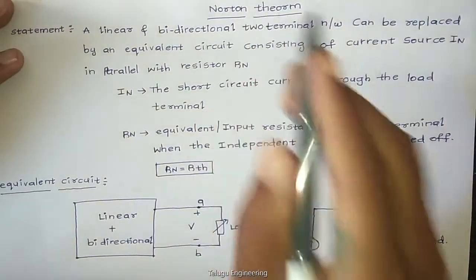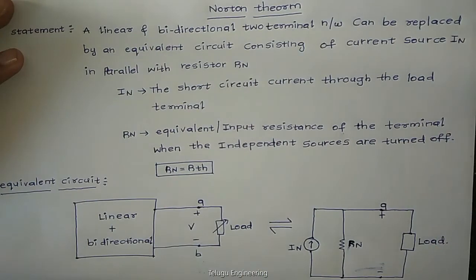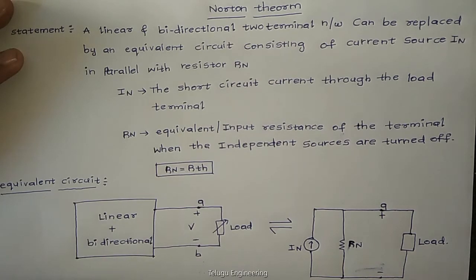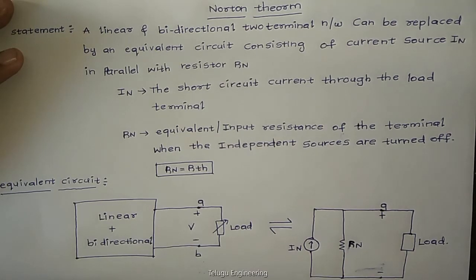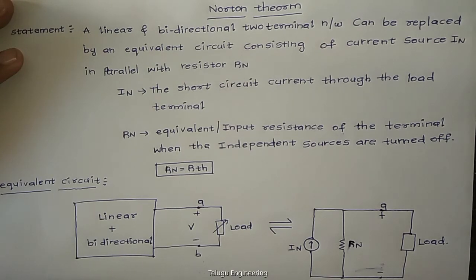In this video, we will talk about the Norton theorem. The Norton theorem is named after Edward Laurie Norton. It was formed exactly 43 years after Thevenin's theorem. Thevenin's theorem was formed by Leon Charlie Steven, and after 43 years of that, Norton came with this theorem.